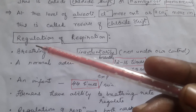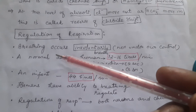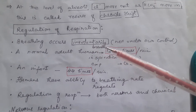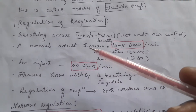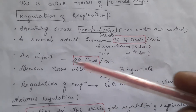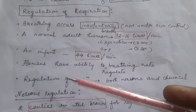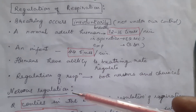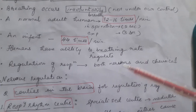When we come to regulation of respiration, breathing generally occurs involuntarily — it is not under our control. A normal adult human being breathes 12–16 times per minute, and an infant will breathe 44 times per minute. Humans have the ability to regulate breathing rate. Regulation of respiration is both nervous and chemical.